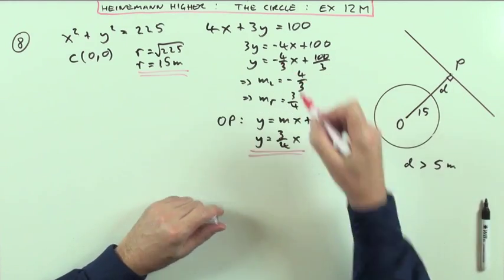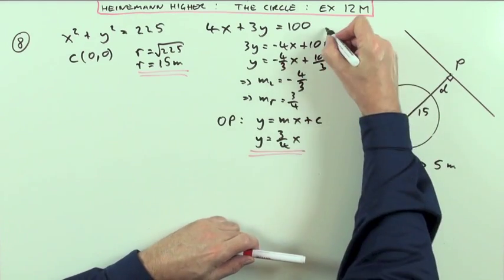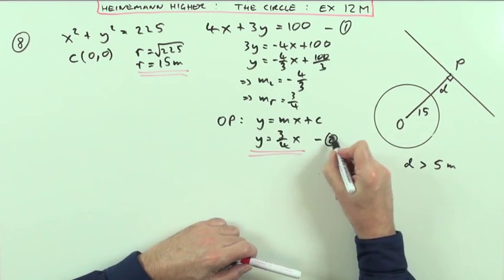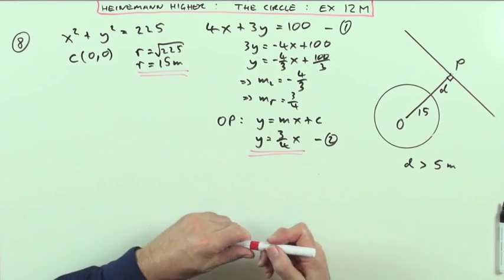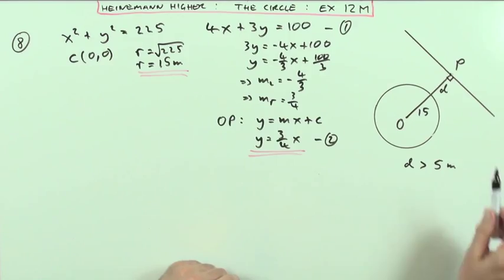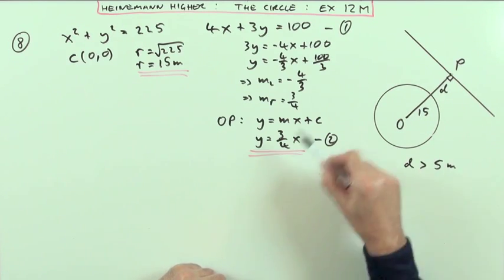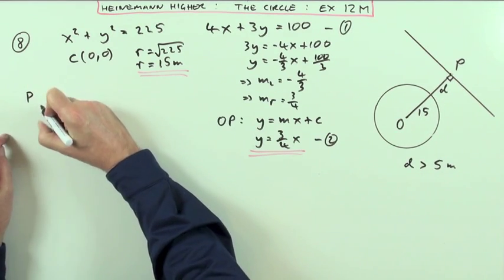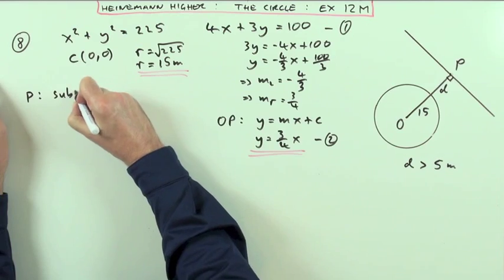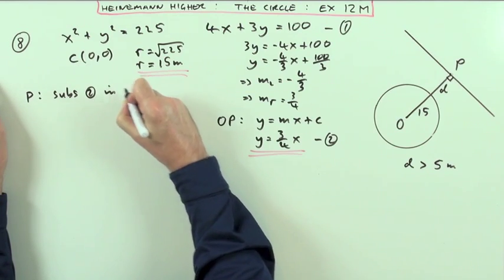I know the equation of this line, which I could call 1. I've got the equation of line OP, which I could call 2. So I could find point P by substituting one into the other. What are the coordinates of P? I'll substitute 2 in 1.